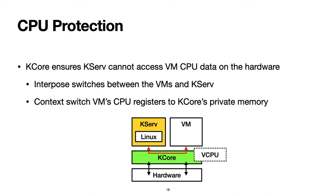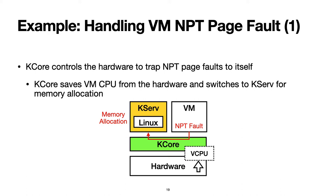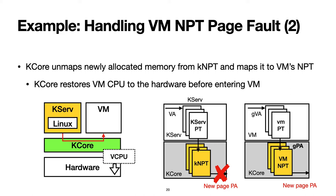Here I use an example to show how KCore protects VM data when handling a page fault from a VM's nested page table. KCore controls the hardware to trap the page fault to itself, then switches to KSERV to allocate a new page for the faulty VM. Before entering KSERV, KCore context switches the hardware to KSERV, ensuring KSERV cannot access VM CPU data. After KSERV finishes memory allocation, KCore unmaps the newly allocated page from KSERV's nested page table, then maps it to the VM's nested page table. Finally, KCore restores the VM's CPU registers to the hardware before entering the VM.